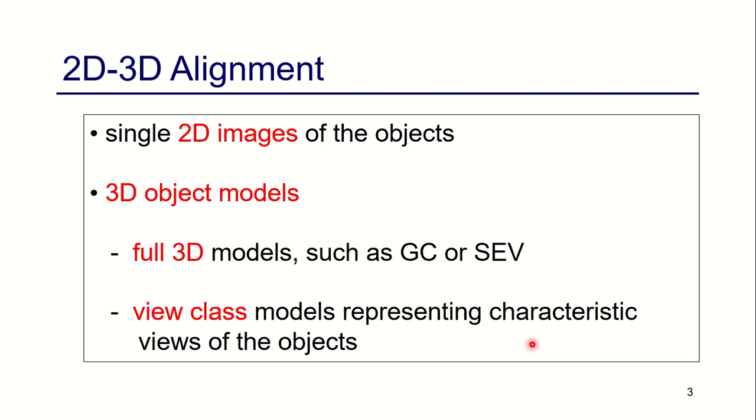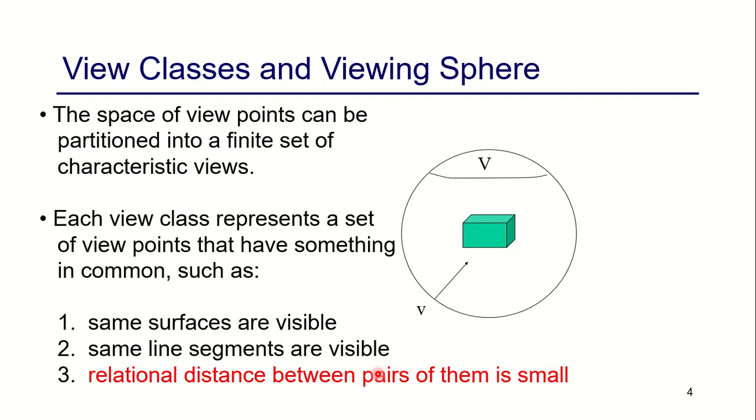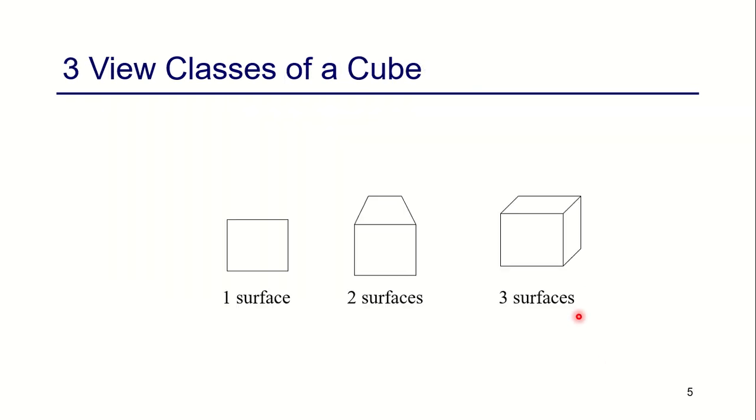View class models representing the characteristic view of the objects. View classes and viewing sphere: the space of view points can be partitioned into a finite set of characteristic views. Each view class represents a set of view points that have something in common. Three view classes of a cube: either we can see one surface of a cube, two surfaces of a cube, or three surfaces of a cube.